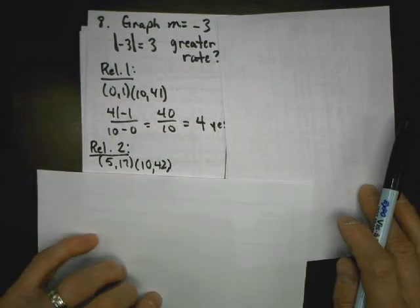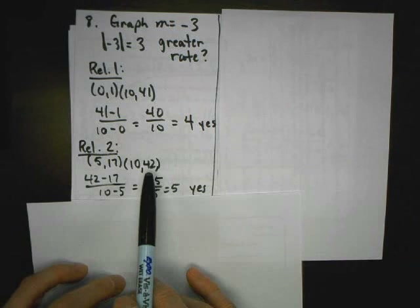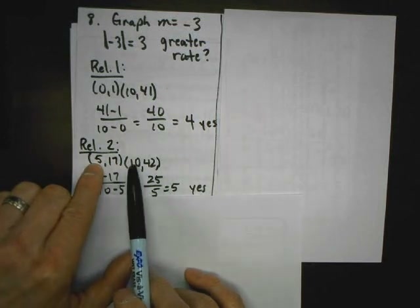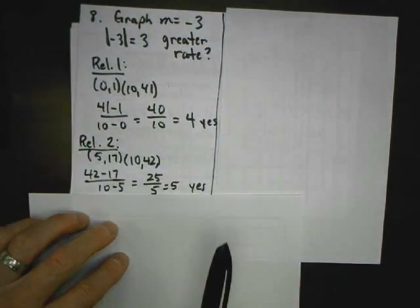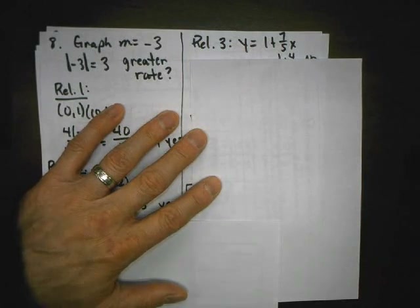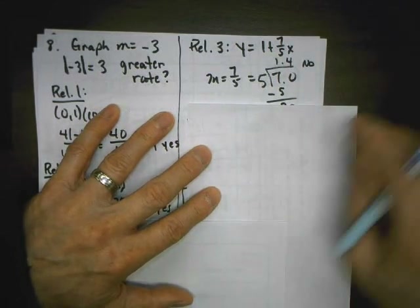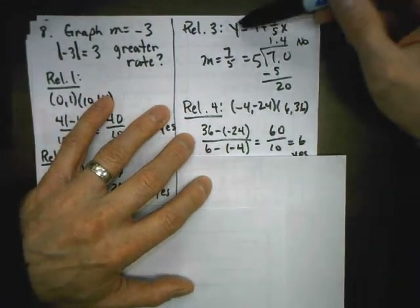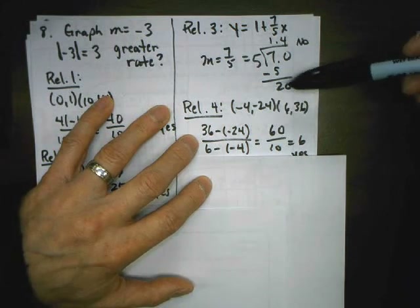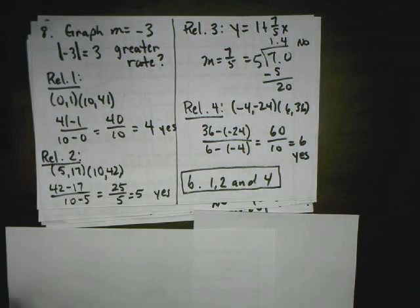Relation two is another table. I'll pick any two points — it should be a constant rate of change. I go right minus left on both top and bottom: 42 minus 17 over 10 minus 5, and I get a slope of 5. That's steeper than 3. Relation three is an equation already in slope-intercept form — the coefficient is the slope, seven-fifths, which converts to about 1.4. That's not greater than 3, so it's not steeper. Relation four: I take the two given points, do y minus y over x minus x, and get a slope of 6. So the relations with steeper slope are 1, 2, and 4.